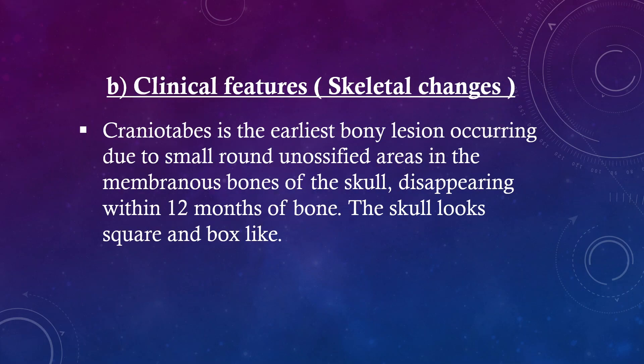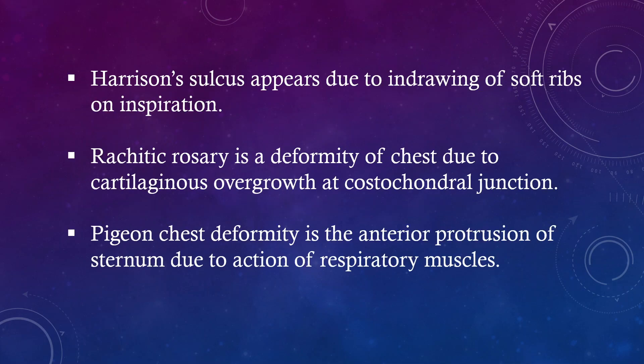Clinical Features — Skeletal changes. Craniotabes is the earliest bony lesion occurring due to small round unossified areas in the membranous bones of the skull, disappearing within 12 months. The skull looks square and box-like. Harrison's sulcus appears due to in-drawing of soft ribs on inspiration. Rachitic rosary is a deformity of the chest due to cartilaginous overgrowth at the costochondral junction. Pigeon chest deformity is the anterior protrusion of the sternum due to action of respiratory muscles.